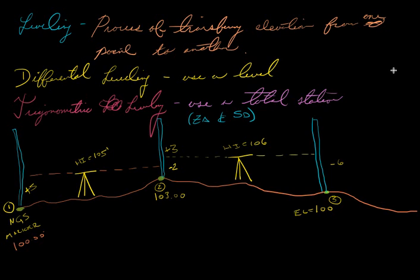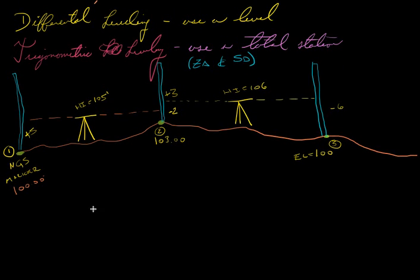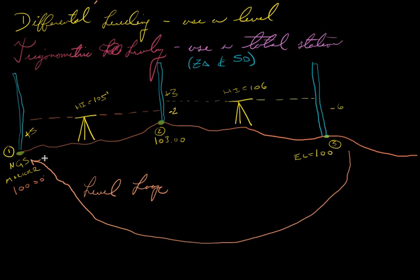Usually what you want to do is a level loop. You're going to keep doing what you've done here and loop all the way around. Come all the way around in a big circle and tie back into point one. This is for a check. You're not going to be always perfect. You're not going to come around here and hit 100 perfectly. You might do it sometimes, but it's very hard to do.